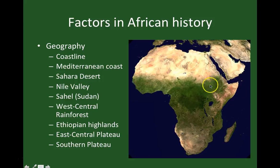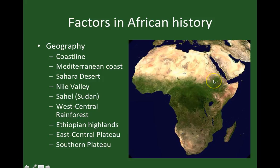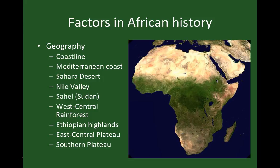We also have the region called the Ethiopian Highlands where of course Ethiopia is. This sustained a wonderfully rich civilization — the first or longest-lasting Christian society in Africa. Ethiopia was converted to Christianity all the way back in the 4th century and has maintained its Christian identity all the way to the present. This is very much a mountainous region. Even though it's close to the equator, it's quite cool relative to much of the rest of Africa — a fairly temperate climate there.